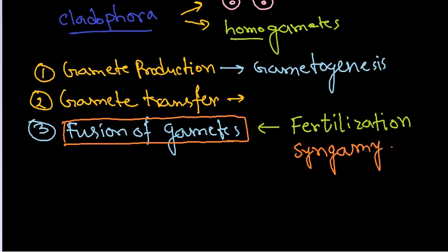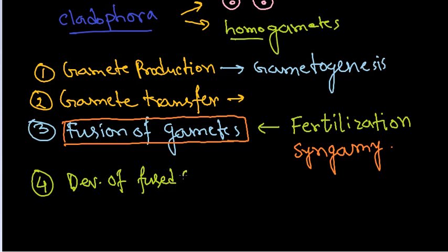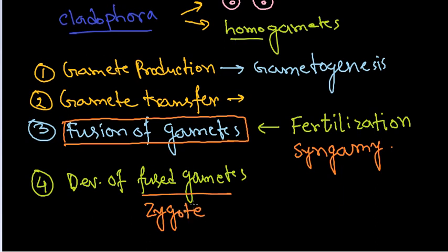Once the fusion of gametes is done, the fourth stage is the development of the fused gametes. The fused gametes have a different name — they are called a zygote. All these terms should be crystal clear in your mind if you want to pursue a career as a biologist, because they are the basics of biology.